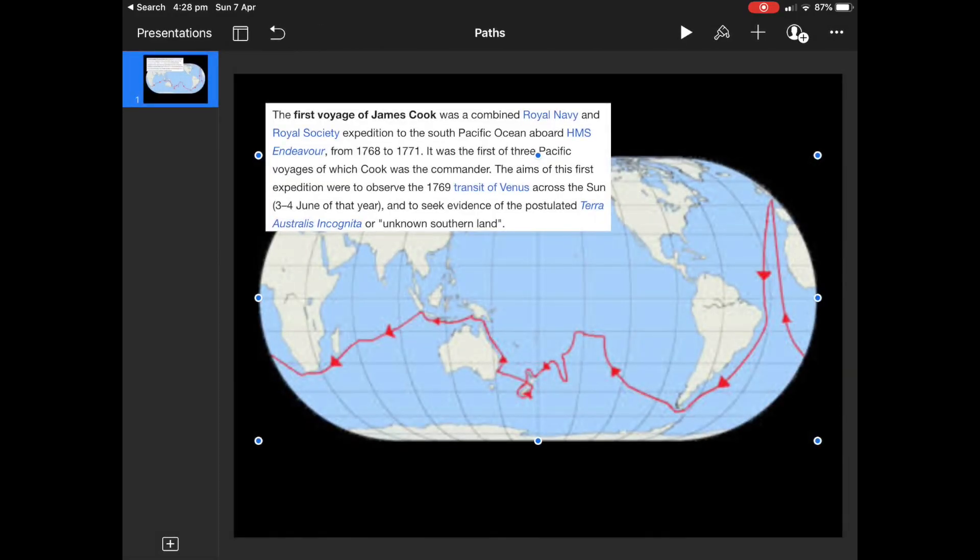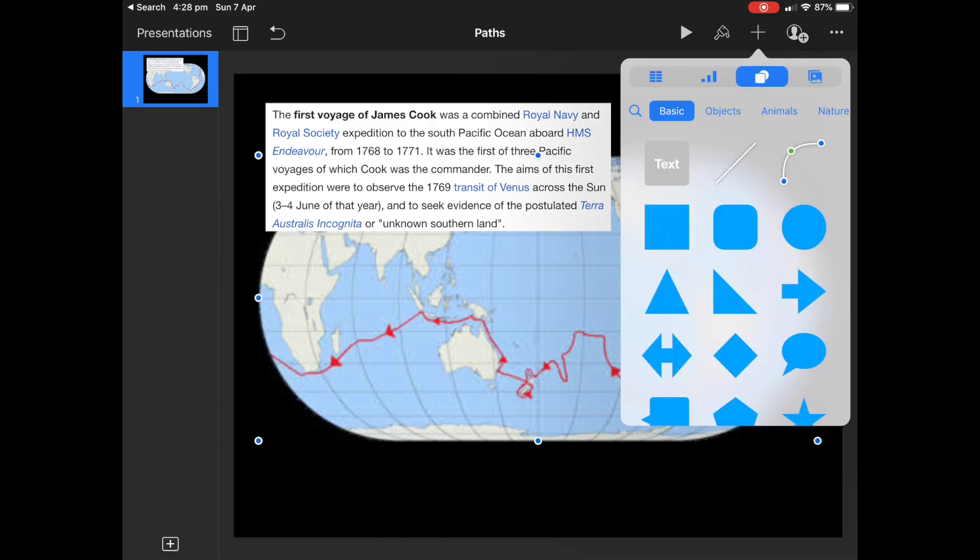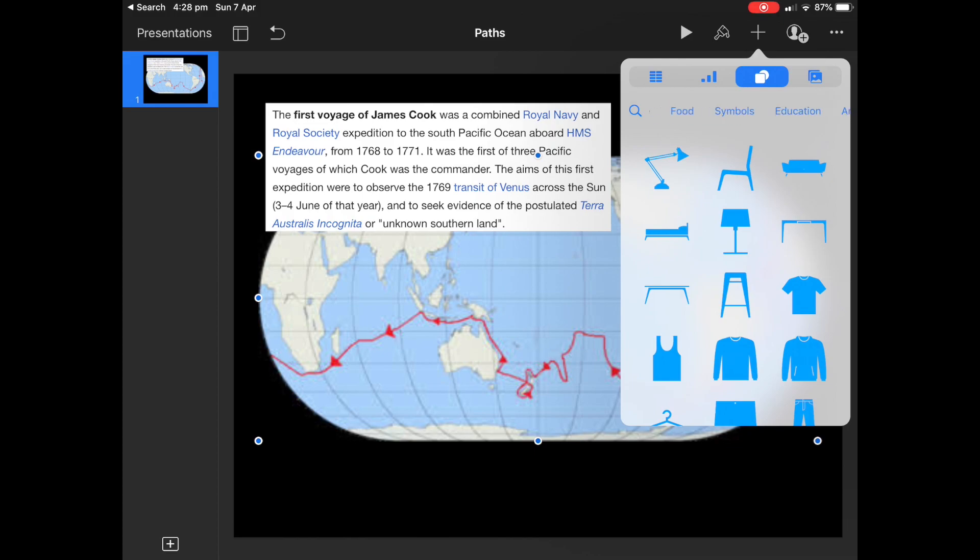So here is a little tutorial looking at that motion path and the famous explorers, and it's really easy to do. Now I've got a graphic here but you could easily use a Keynote shape of the world if you wanted to.